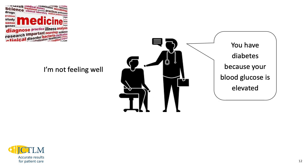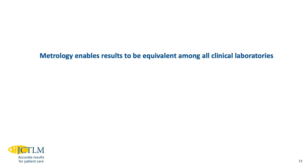When the physician receives the laboratory information, they're able to inform the patient — in this particular example, 'you have diabetes because your blood glucose is elevated.' Many other laboratory tests would inform the physician what type of disease the patient might have. Metrology enables results to be equivalent among all clinical laboratories. It's very important that results be equivalent so that physicians can base their diagnostic decisions on standardized guidelines for interpreting laboratory results and treating diseases.